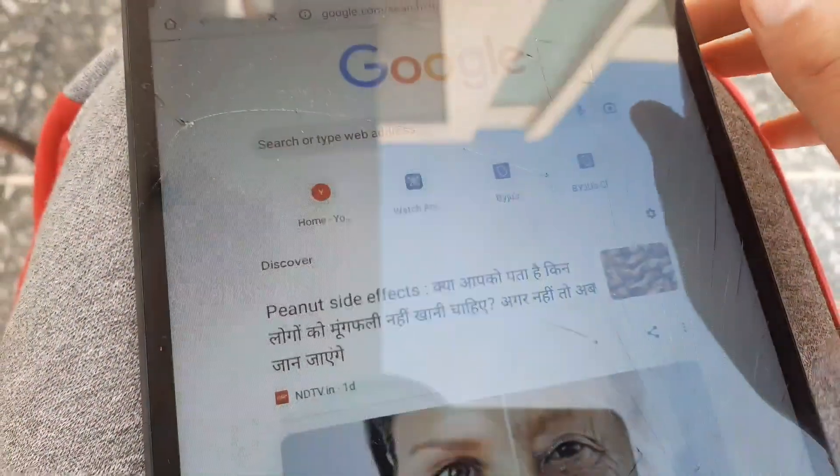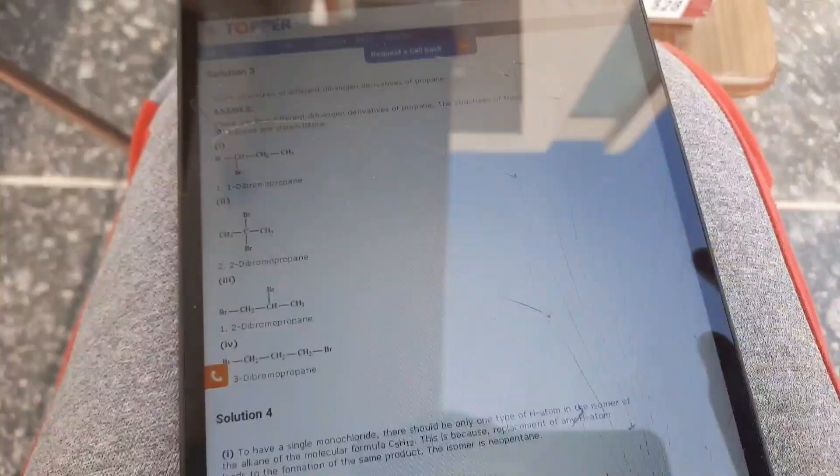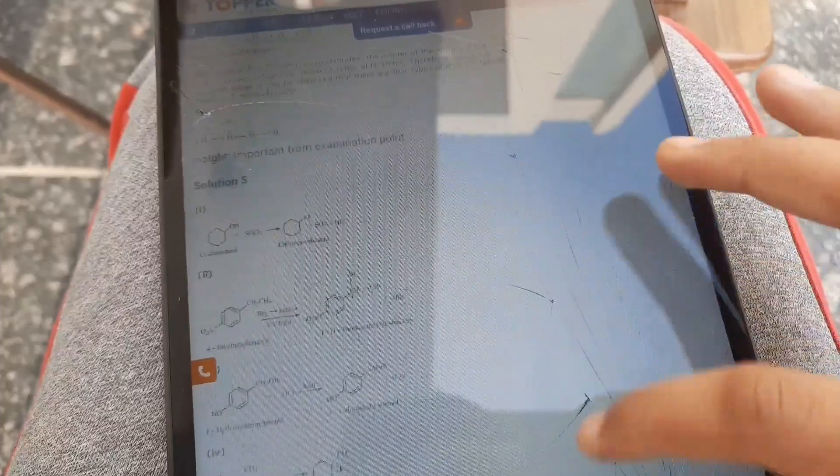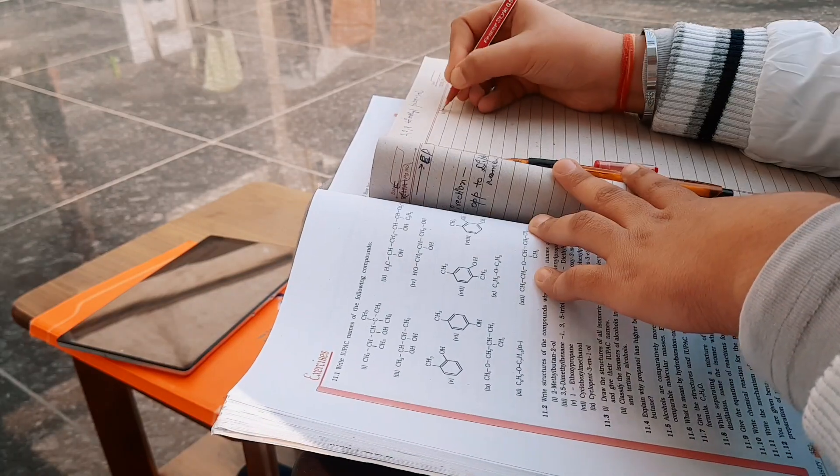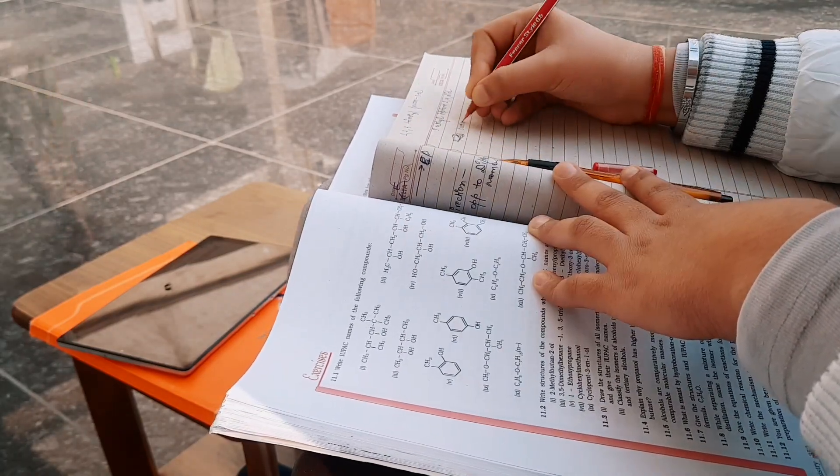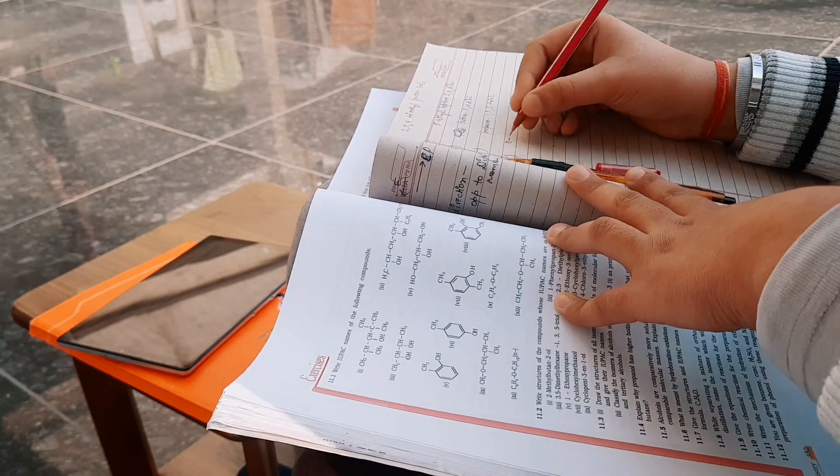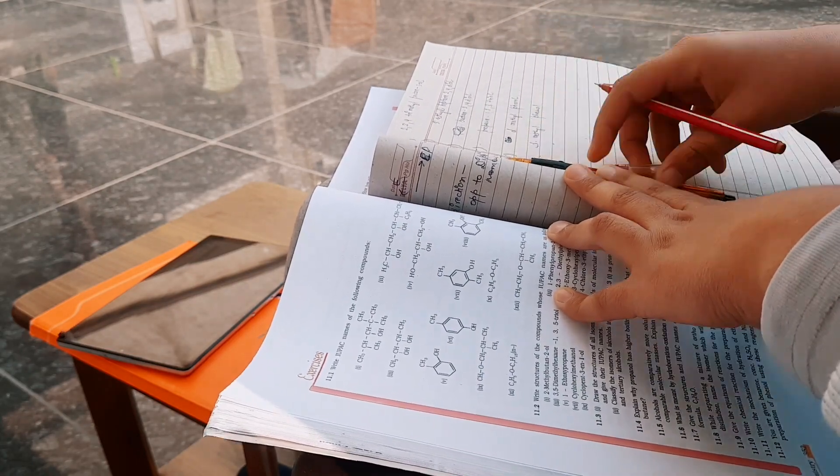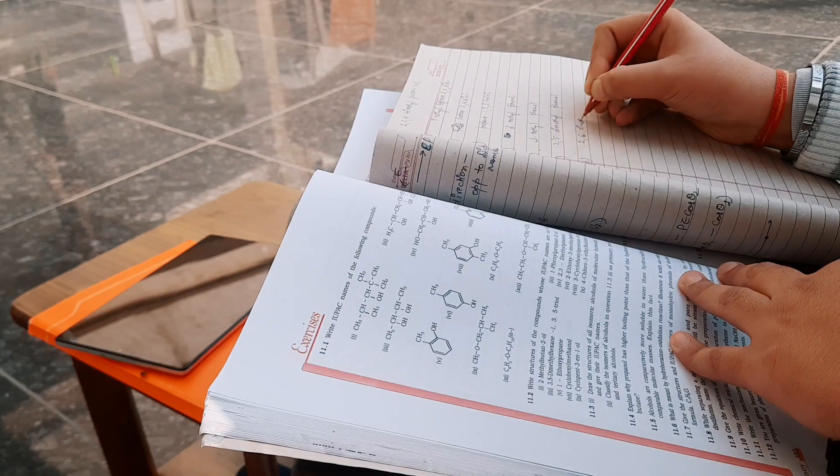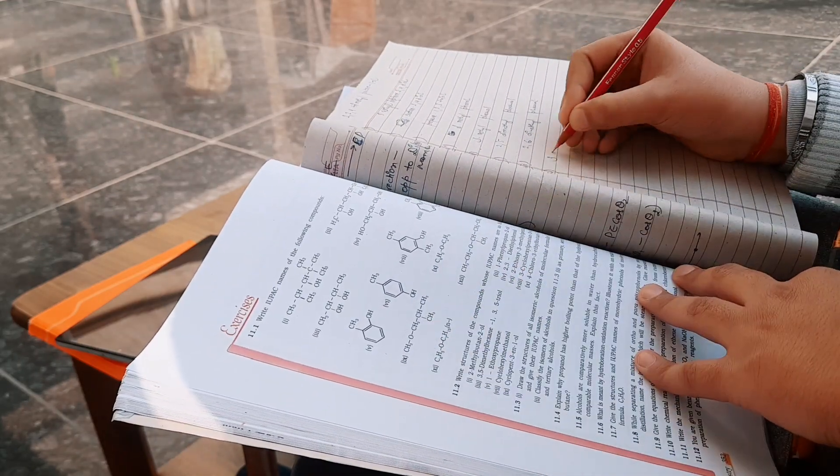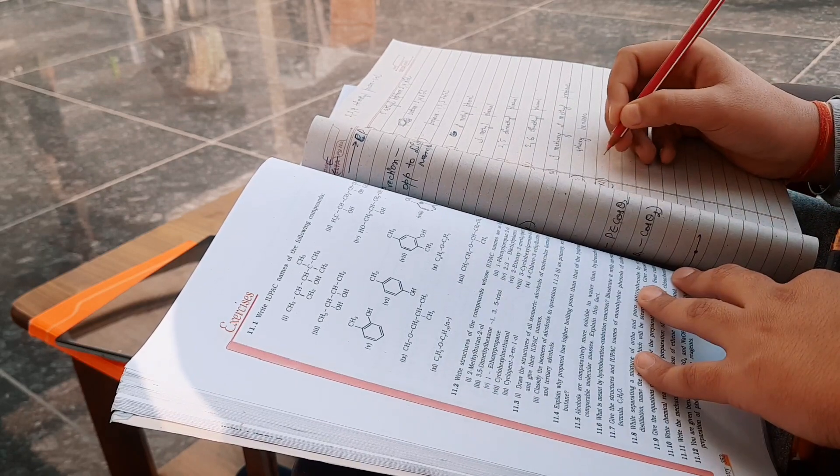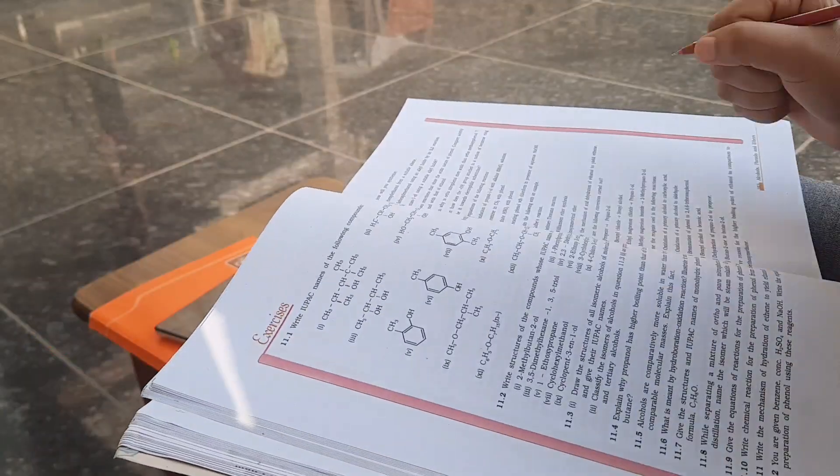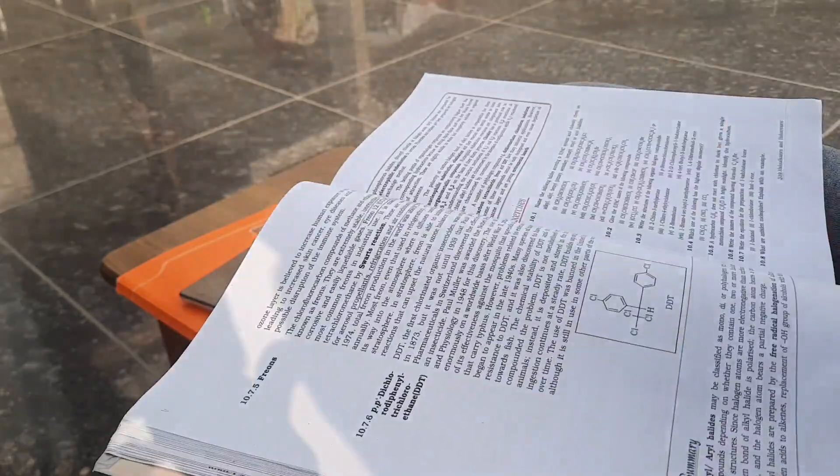Now I came outside. Till the time sunlight is there I will sit outside only because I was feeling very cold. I did a blunder - first I started the alcohol chapter. I was solving nomenclature part. I thought there are mixed questions but then I proceeded further and saw that these questions are of alcohol. Then I started resolving questions of haloalkane chapter.